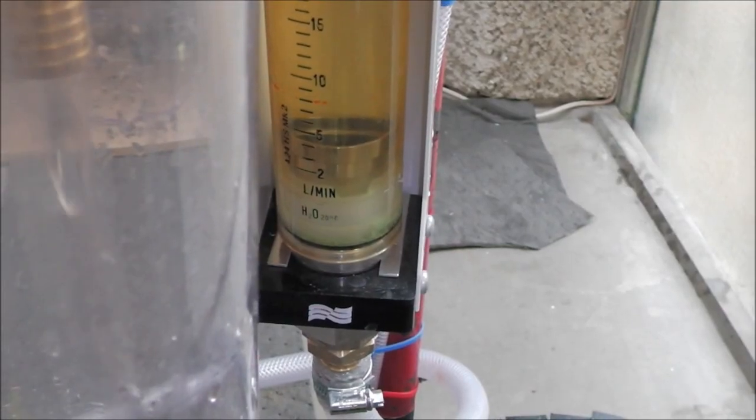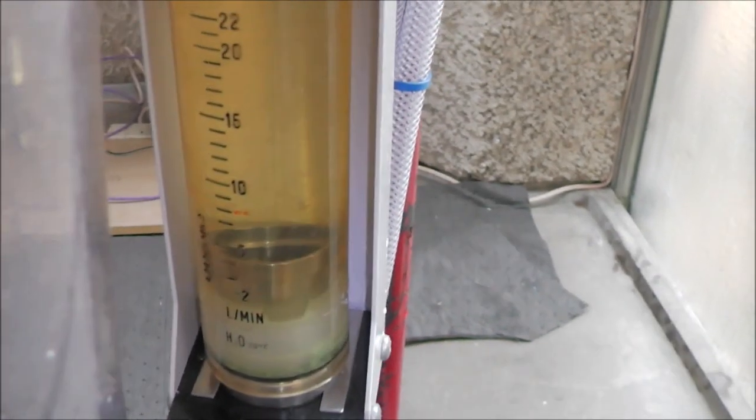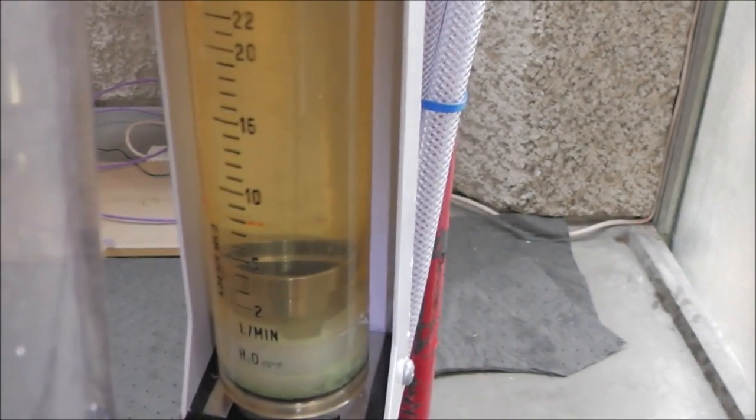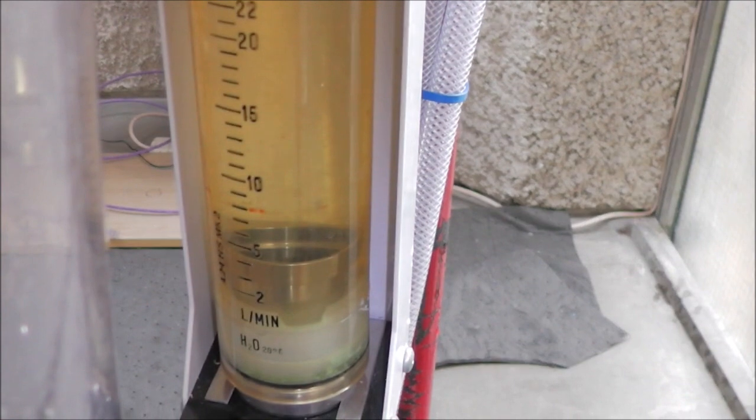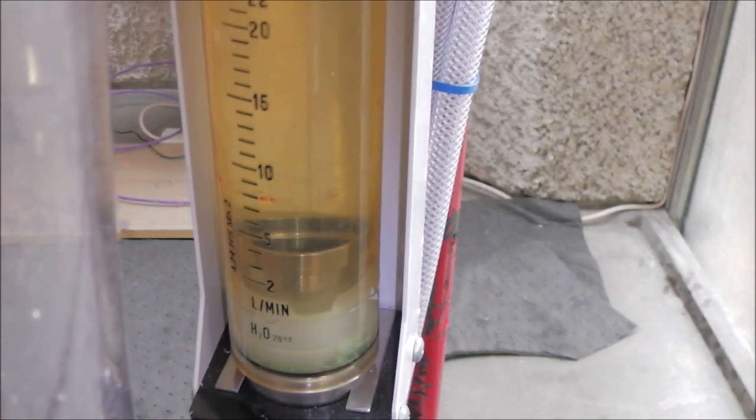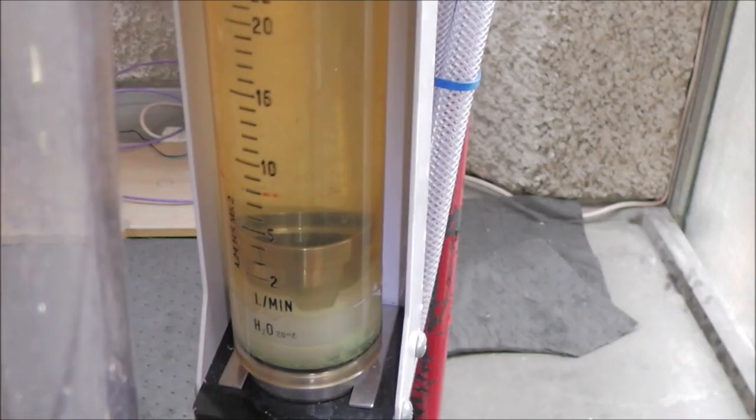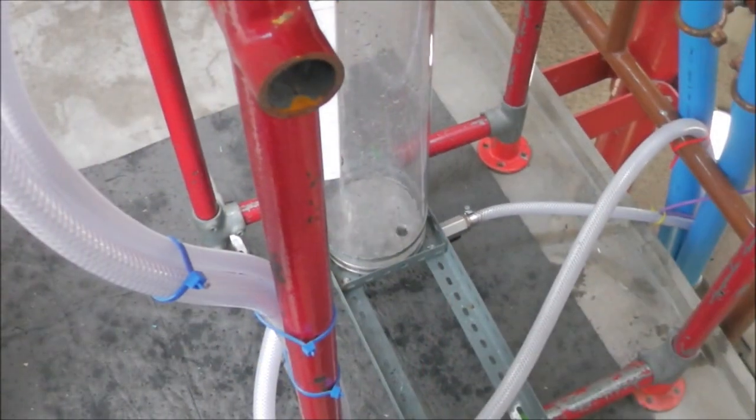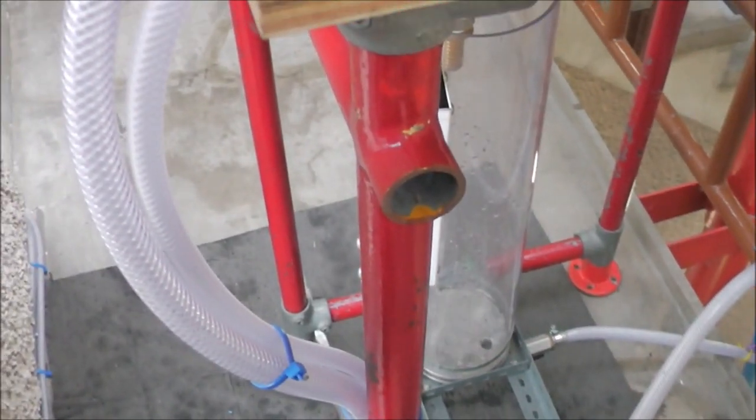A rotameter measures the flow rate. Here we are pumping at around 4.5 liters per minute or equivalently 270 liters an hour. This can be increased significantly by either driving the DART pump harder or by decreasing the head to which it is pumping to.